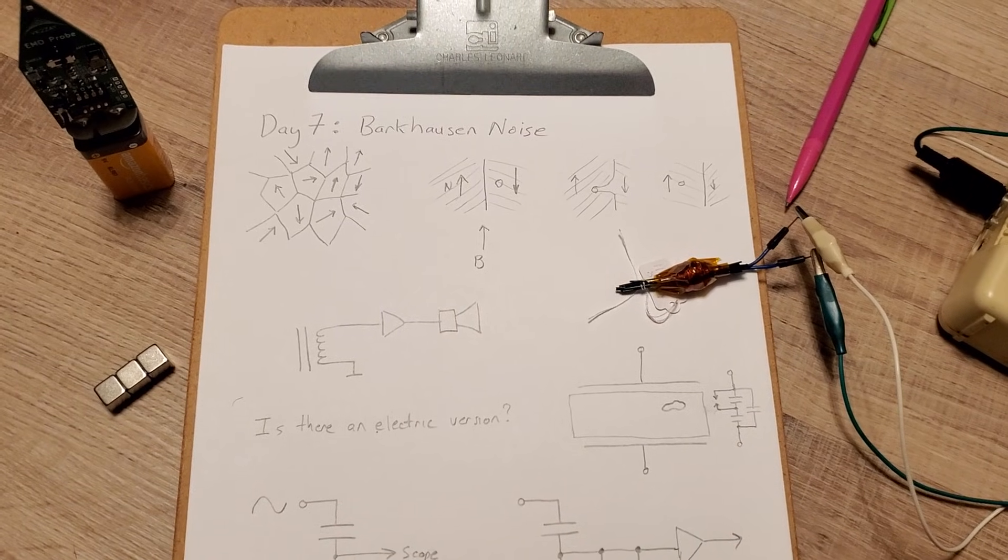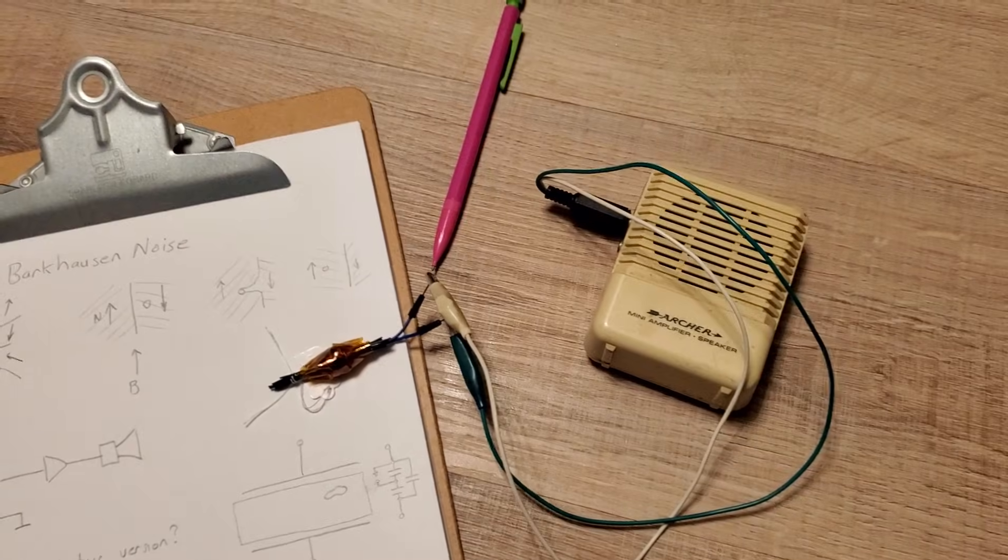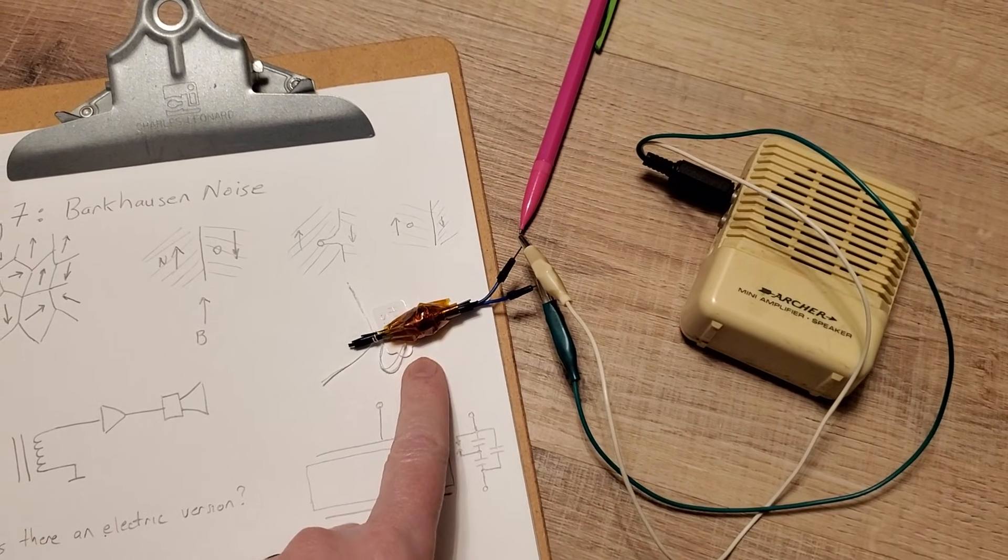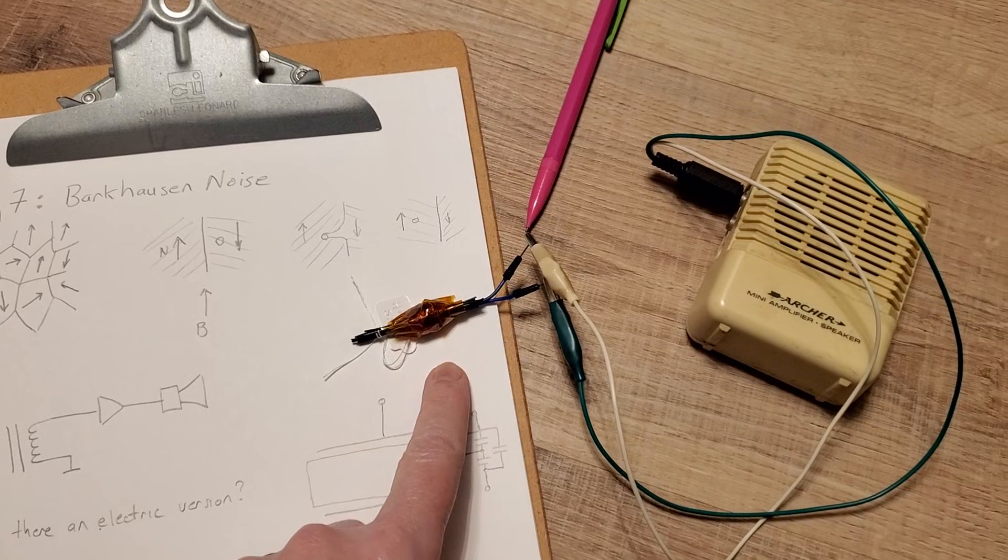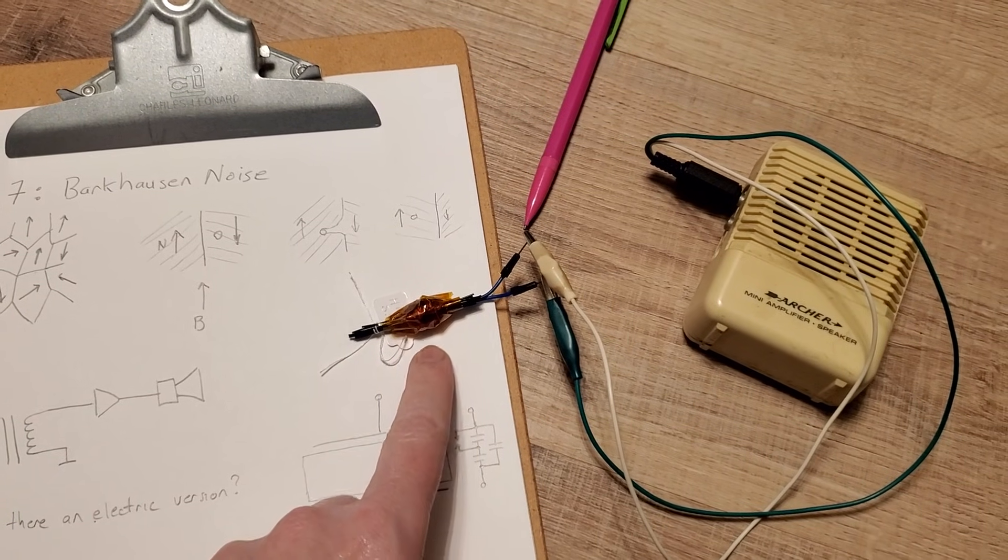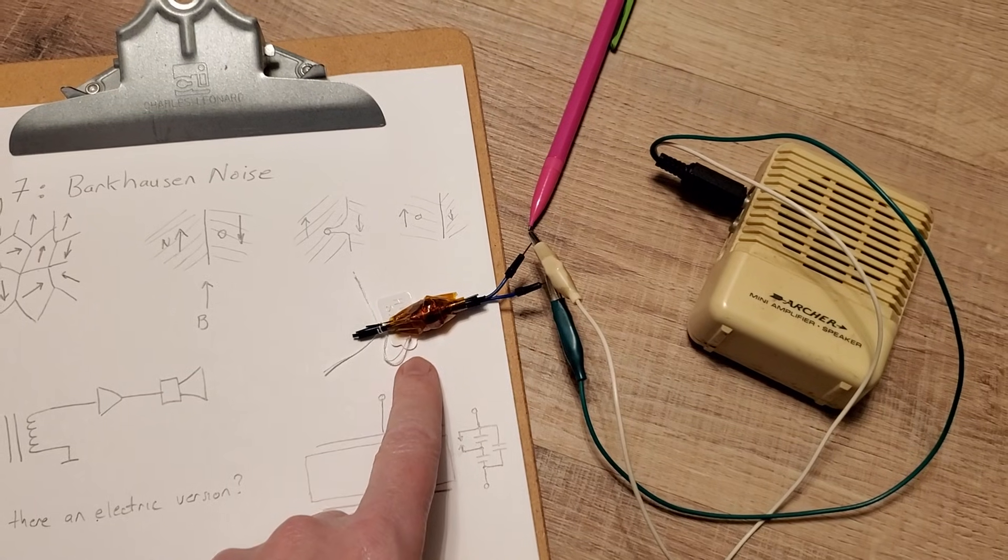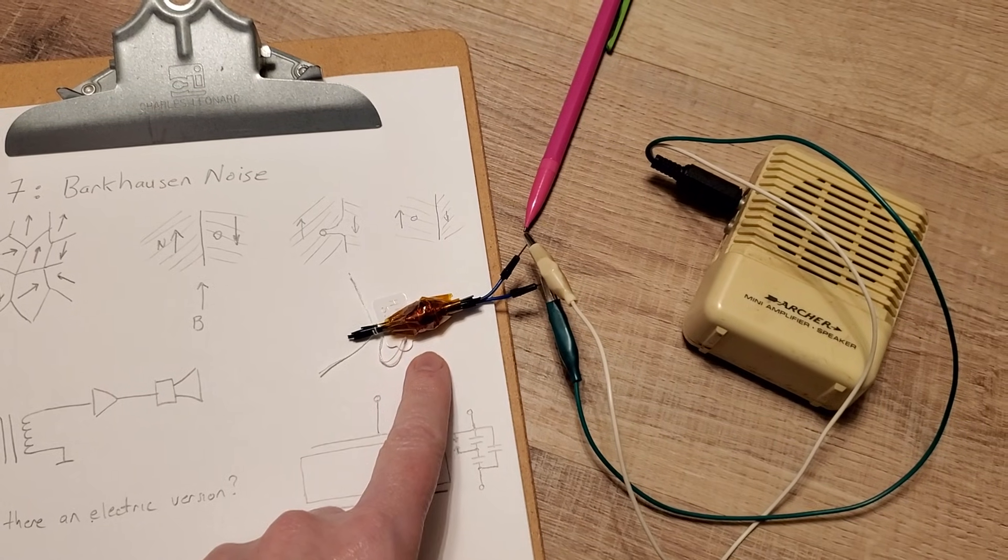To detect it you don't actually need much. Really you just need an audio amplifier and a core. Here I took some artist wire, the kind a florist might use to tie flowers. I cut off about 10 pieces of that and then I wrapped it with about 300 turns of 30 gauge magnet wire.